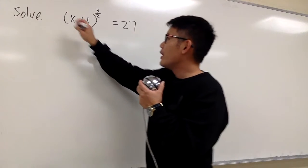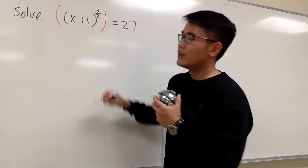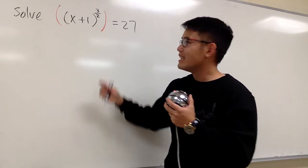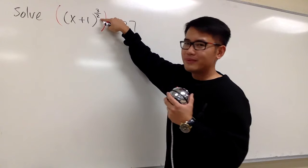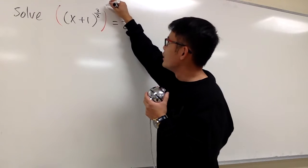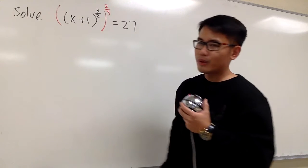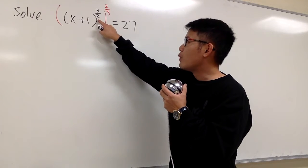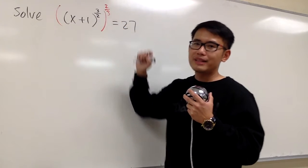I will raise this to another power, so that this will be just something to the first power. This is 3 over 2. I'm just going to raise this to the 2 over 3 power. Why did I choose to do that? Because when we have power to a power, we multiply the powers, right?